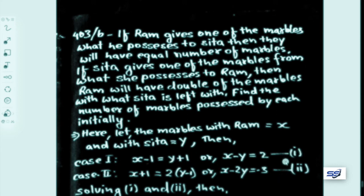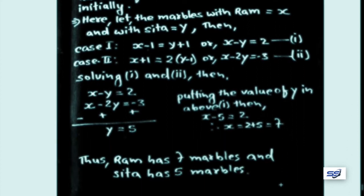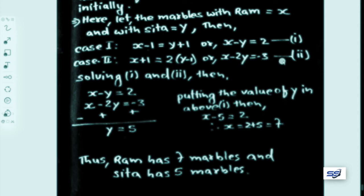Solving equations 1 and 2: equation 1 is x minus y equals 2, and equation 2 is x minus 2y equals minus 3. Subtracting equation 1 from equation 2 (with sign change): the x terms cancel. Minus y plus 2y gives y, and minus 3 plus 2 gives... so y equals 5.